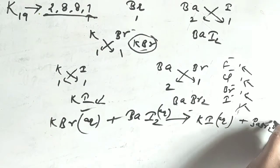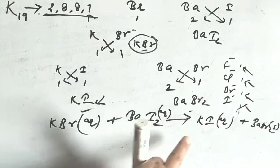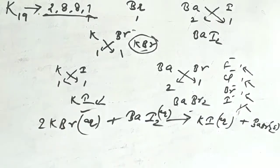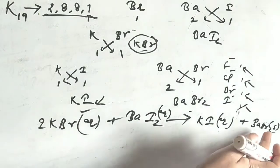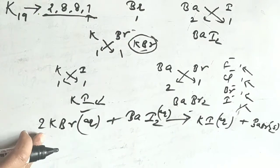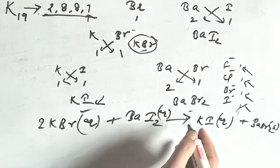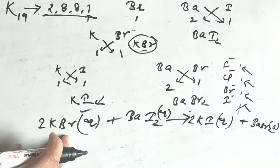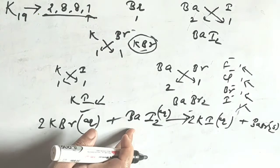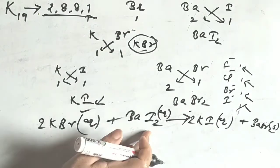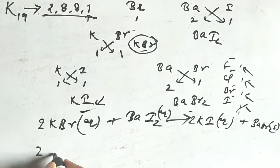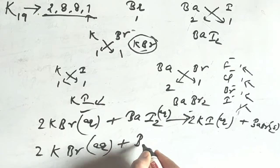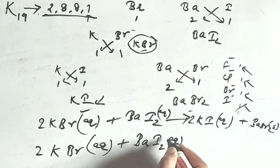Now balancing: K is 1 molecule on the left, Br is 1 molecule but Br is 2 on the right. Put 2 in front of KBr to balance Br. K becomes 2, so put 2 in front of KI. Ba is 1 on each side — balanced. I₂: two I on each side — balanced. The balanced equation is: 2KBr (aq) + BaI₂ (aq) → 2KI (aq) + BaBr₂ (s).